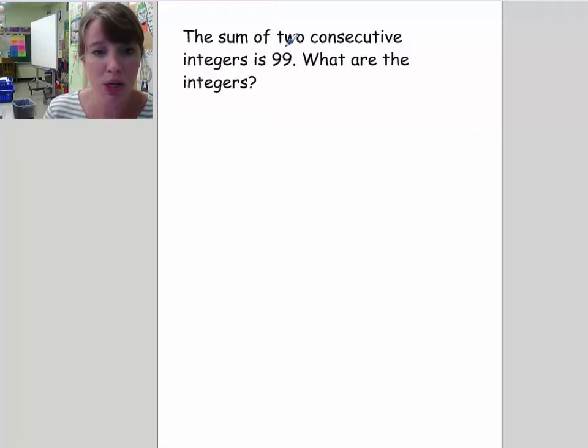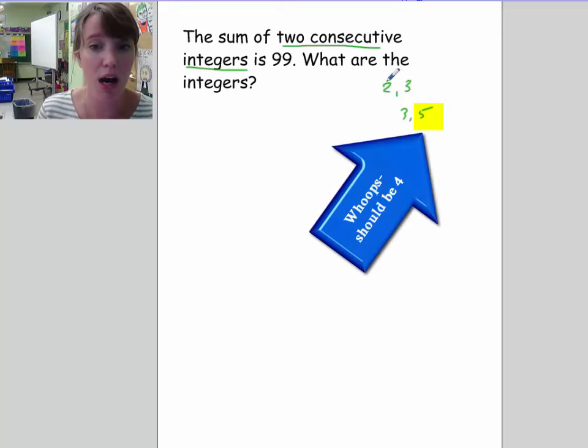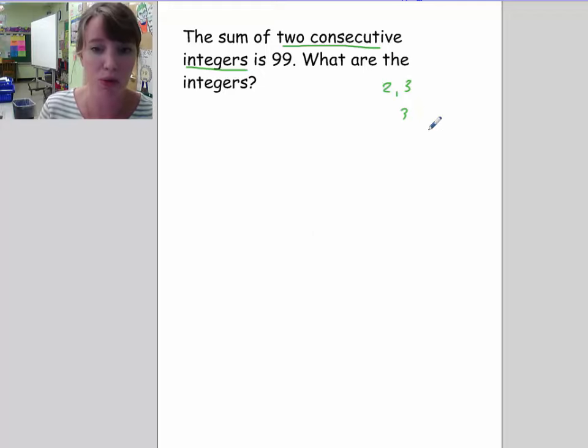So the sum of two consecutive integers. What we know about consecutive integers is that they're right next to each other. So for instance, two and three are consecutive integers. Three and four are consecutive integers. So what we already know is that one is odd and the other one's even. And I meant to write four here. So three and four are consecutive integers. So if the first one's odd, the second one's even, or if the first one's even, the second one's odd. So that's something that we already know. Does that help us here? Probably not, but it's good to remember that in case we do need it somewhere else.